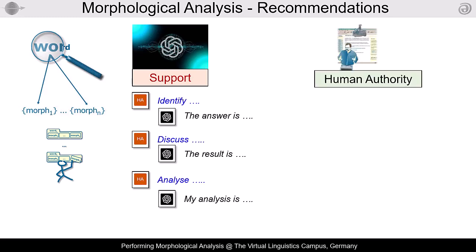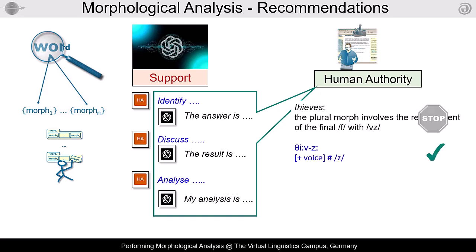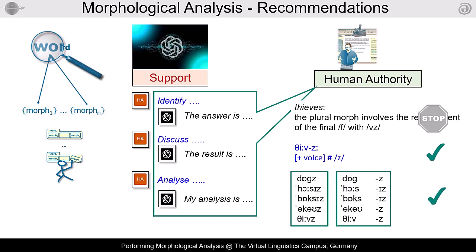Then it's your task. Step 1: use the ChatGPT results and correct the mistakes. Step 2: perform a morphophonemic analysis of the data by hand. Step 3: compare your results with the ChatGPT prompts.